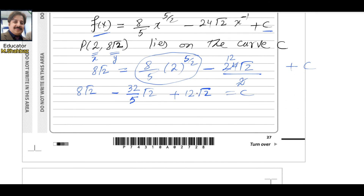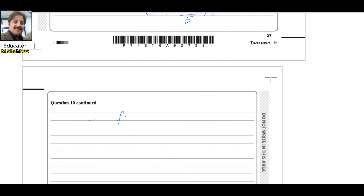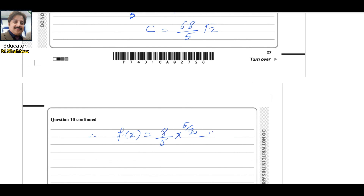So c = 68√2/5. The final answer for f(x) is: f(x) = (8/5)x^(5/2) - 24√2/x + 68√2/5. This completes the question.